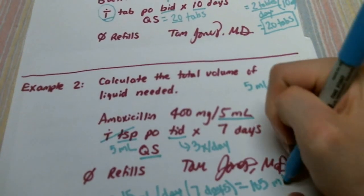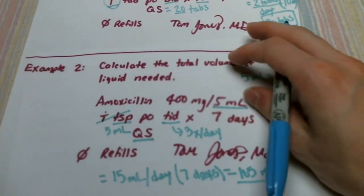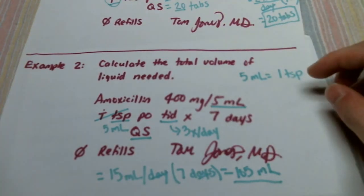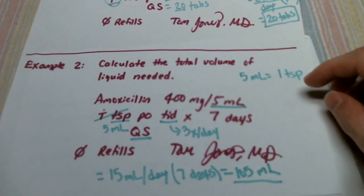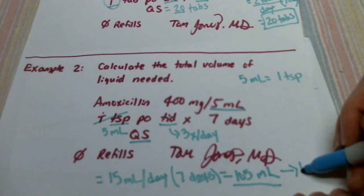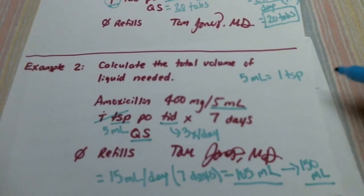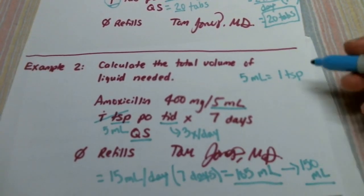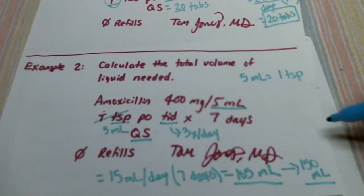Now this is a common situation that you'll see where you need just a little bit more than what's commercially available. There might be a bottle that comes in 100 mLs and another bottle that comes in 150 mLs. Unfortunately, you have to dispense a bottle that's commercially available because that's the most practical thing to do. In this case, a 150 mL bottle is what you'll have to dispense. If you dispense 100 mLs, that's not going to be enough to get the child through.